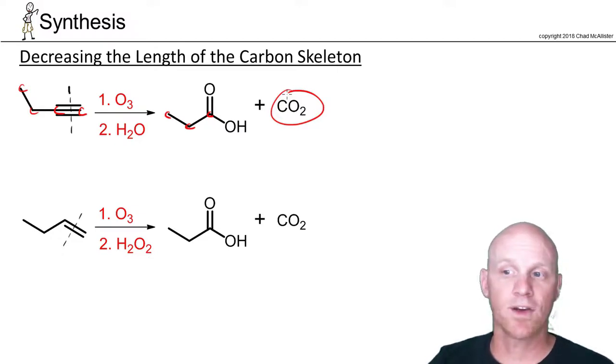If you form a terminal alkyne you lose one carbon. For internal alkynes, you'd get two different carbon chains potentially as both carboxylic acids to worry about.